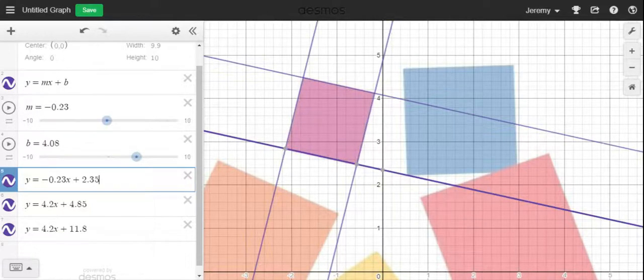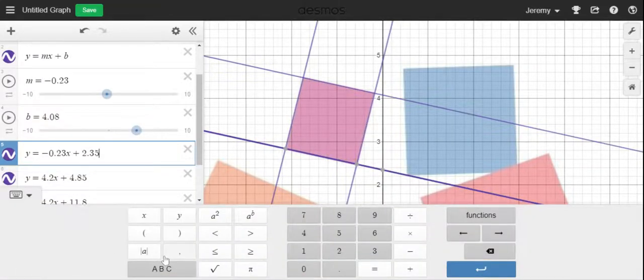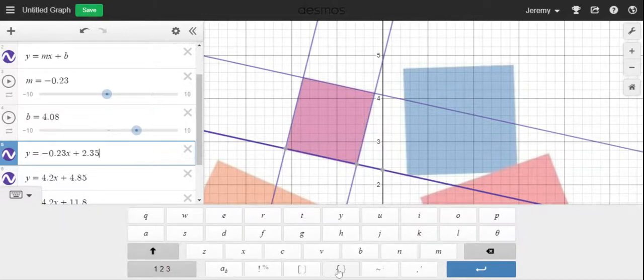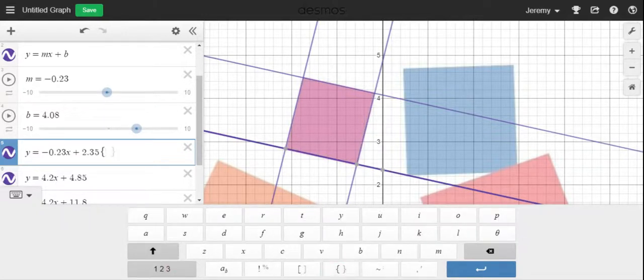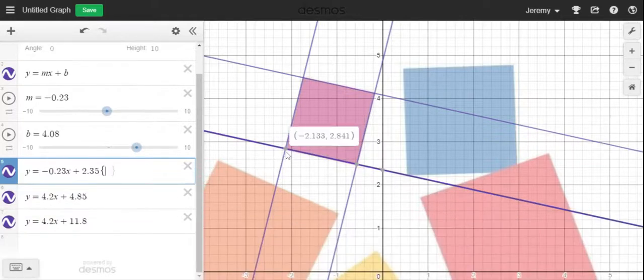So what I want to do is I want to put a restricted domain. The way I do that is I put a little squiggly brace, which can either be found near the enter key or you can go up here. I don't see it. So I'm going to click ABC. And it is right here. The squiggly brace. And what I'm going to do is I'm going to go back here.